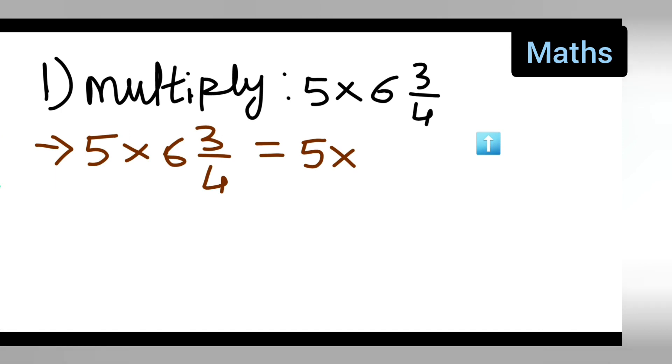Now this is in the form of a mixed fraction. It is like this: quotient, remainder upon dividend.